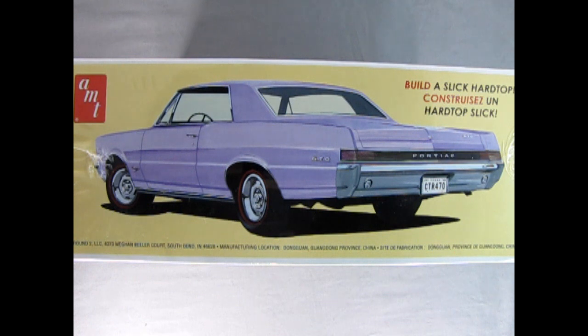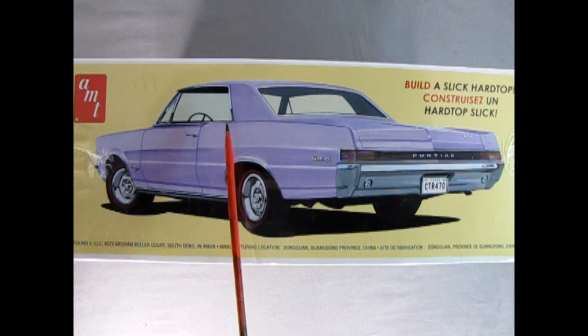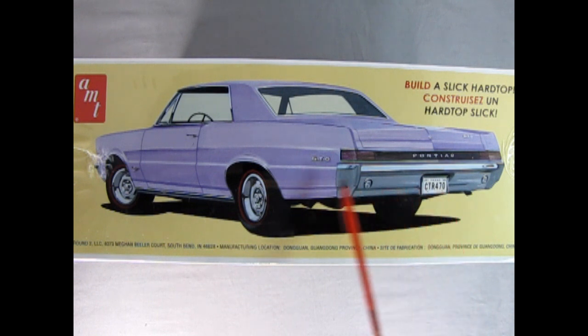Flipping the box up on this side we can see the rear three-quarters. This is built as a hardtop which you also get in this kit. So it says build a slick hardtop. This is painted or colored in a light kind of purple color although my daughter does think it's pink. Here we've got a Texas license plate right on the back.